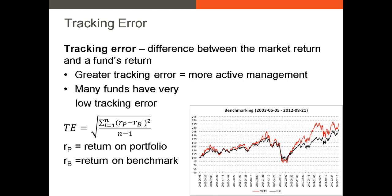Now let's turn our attention to tracking error. Tracking error is the difference between the market return and the fund's return. Funds that are more actively managed have greater tracking error. A lower tracking error is usually a sign that the fund manager is primarily holding the market portfolio in the same weights as the benchmark index. If a fund manager claims the fund is actively managed and is charging a large expense ratio but has low tracking error, you might not want to be investing in that fund. To calculate tracking error, you take the portfolio's return minus the benchmark return in each period, square the deviations, sum them, divide by n minus 1, and take the square root.